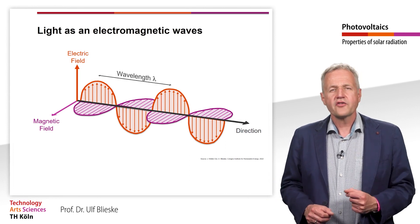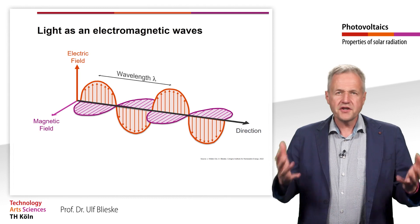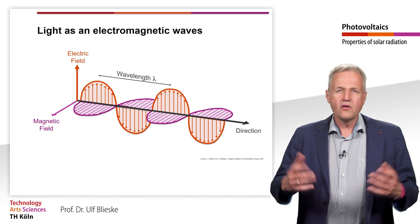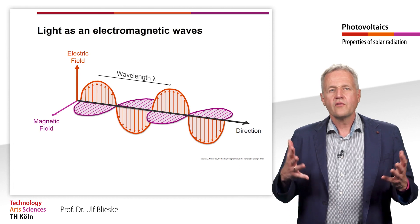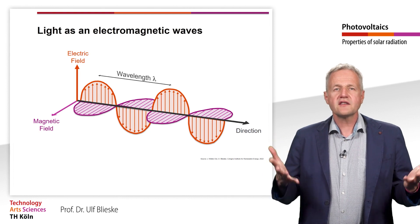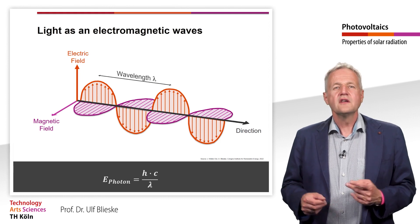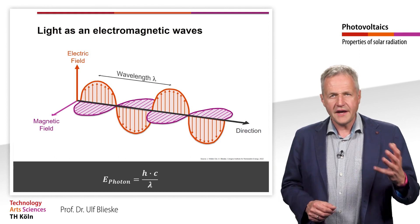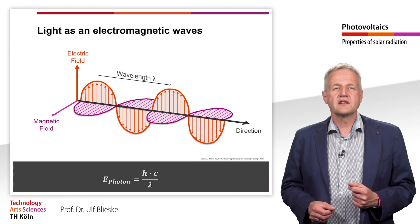However, certain properties of solar radiation, such as the photoelectric effect, are not adequately described by the wave model. These can only be described by the particle properties of the radiation. We then speak of photons. In the particle concept, each photon is assigned a specific energy that depends on its wavelength. This energy can be calculated using the equation presented here, where h is the Planck's constant and c is the speed of light in a vacuum.